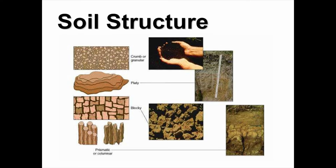Soil particles don't exist as individual particles — they group together to form aggregates. A soil aggregate is a collection of sand, silt, and clay particles and how they hold together. The size and arrangement of those aggregates is what we call soil structure. Soil structure is critically important — more so than texture alone — because it determines how much water the soil stores, how water moves through it, how roots penetrate, how oxygen moves in and out, and the soil's resistance to erosion, compaction, and crusting.